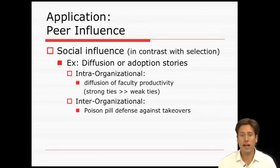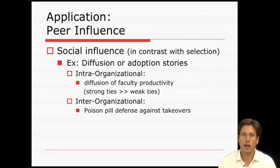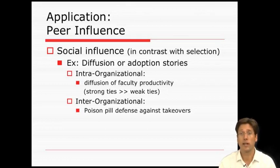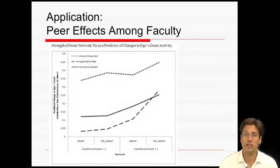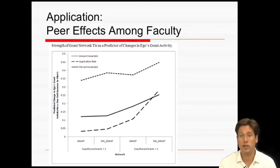For example, research found that the use of poison pills in corporate takeovers was an organizational innovation that spread via interlocking boards of directors. The poison pill was a strategy firms used to prevent takeovers in the 1980s and 1990s, making firms seem like an expensive, low-profit gamble. Within a single university, Craig Rawlings and I studied how faculty productivity diffuses through collaboration networks. We found that a university could improve its grant record by getting successful grant seekers to collaborate with novice grant seekers, improving application rates, success rates, and amounts awarded.